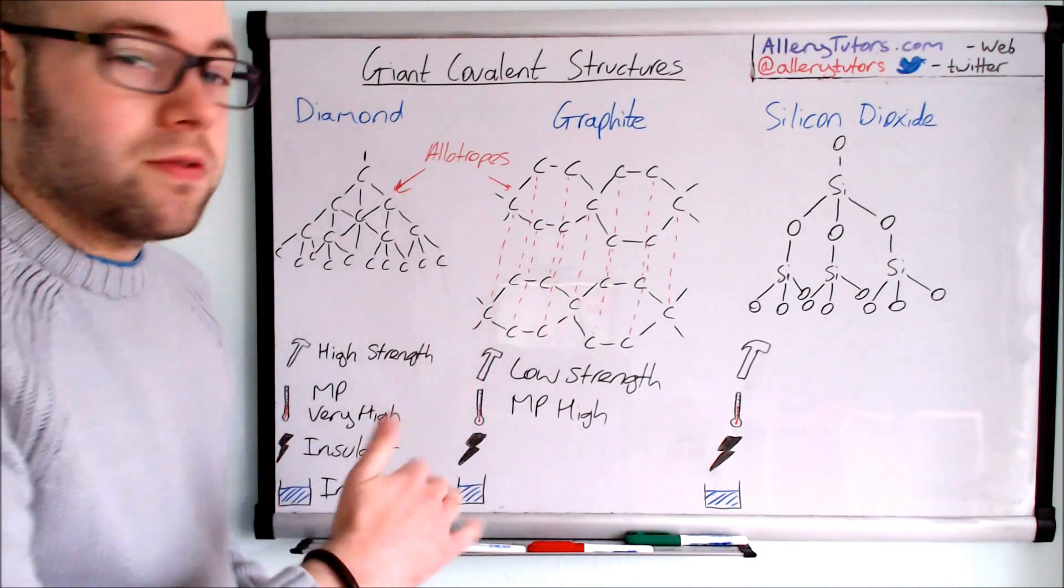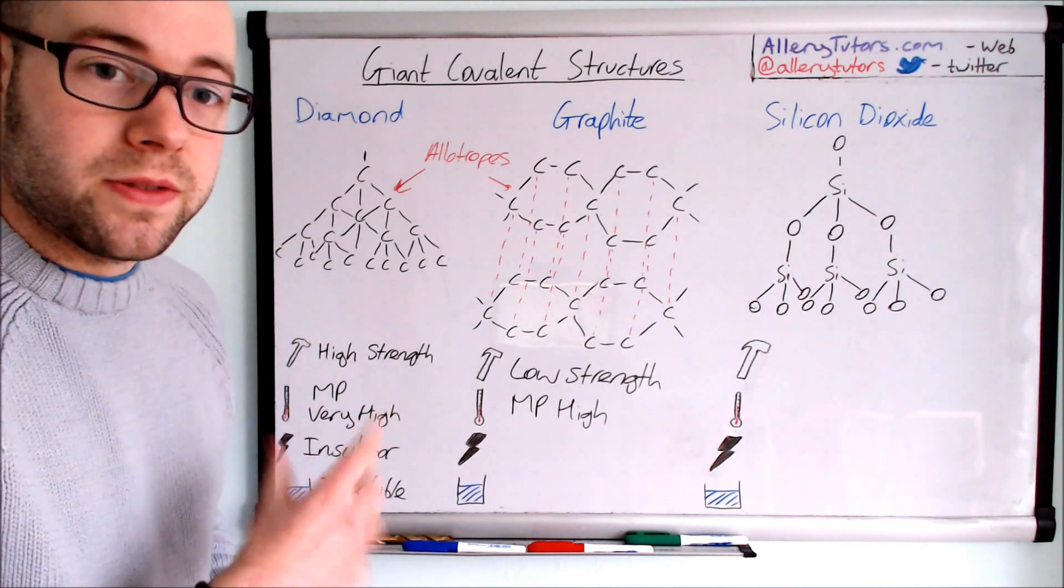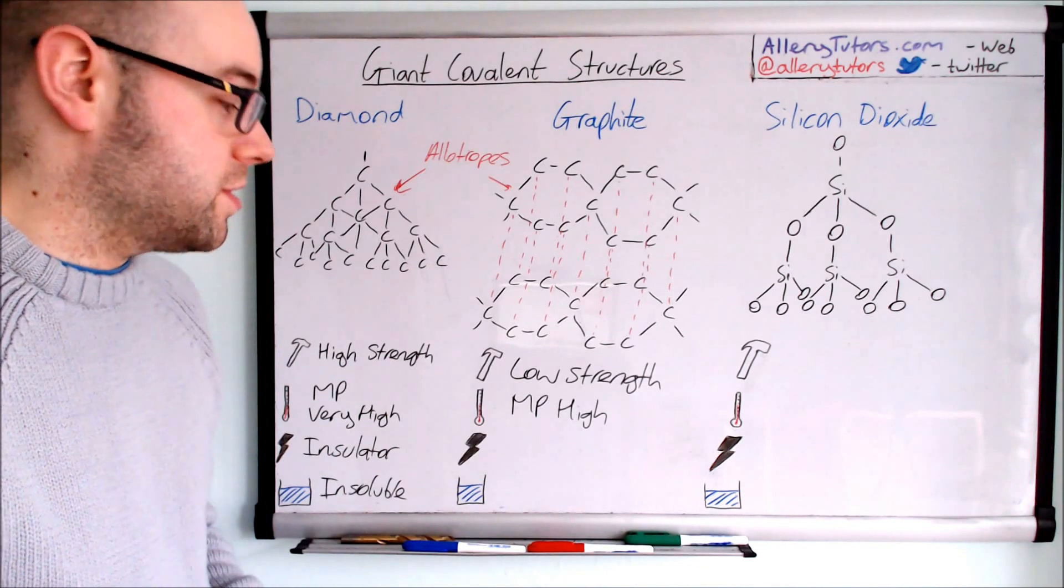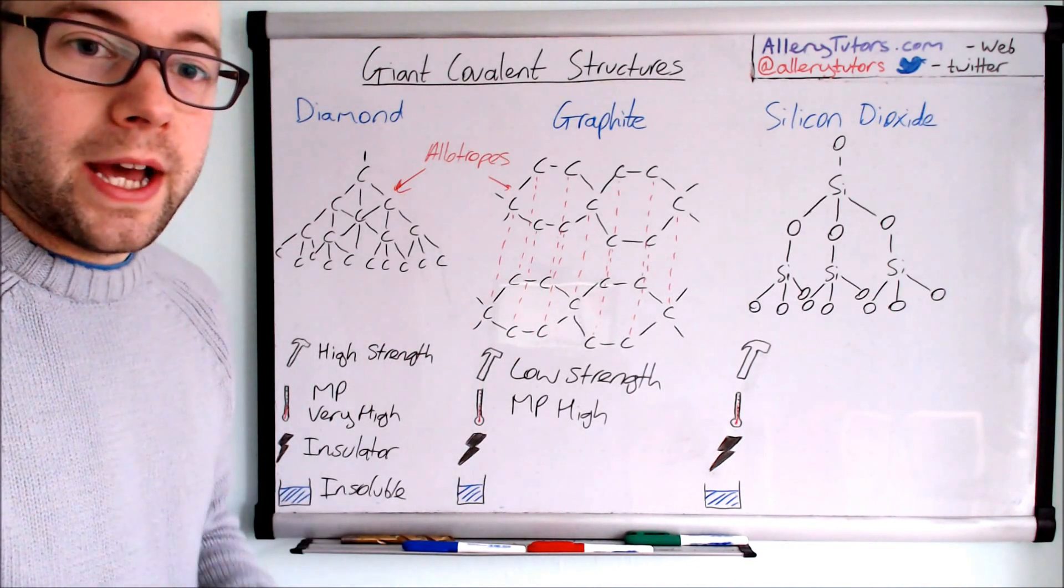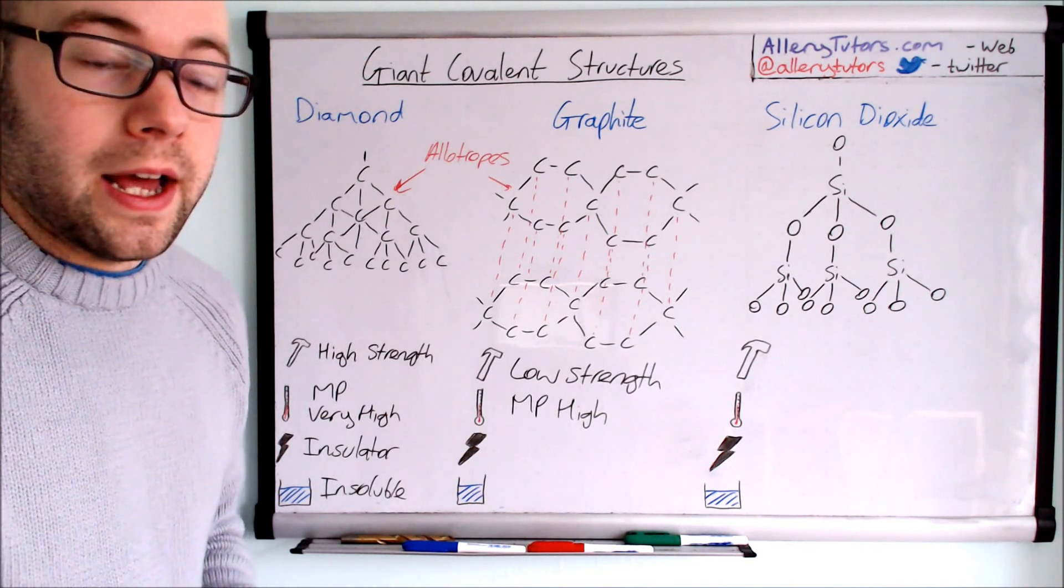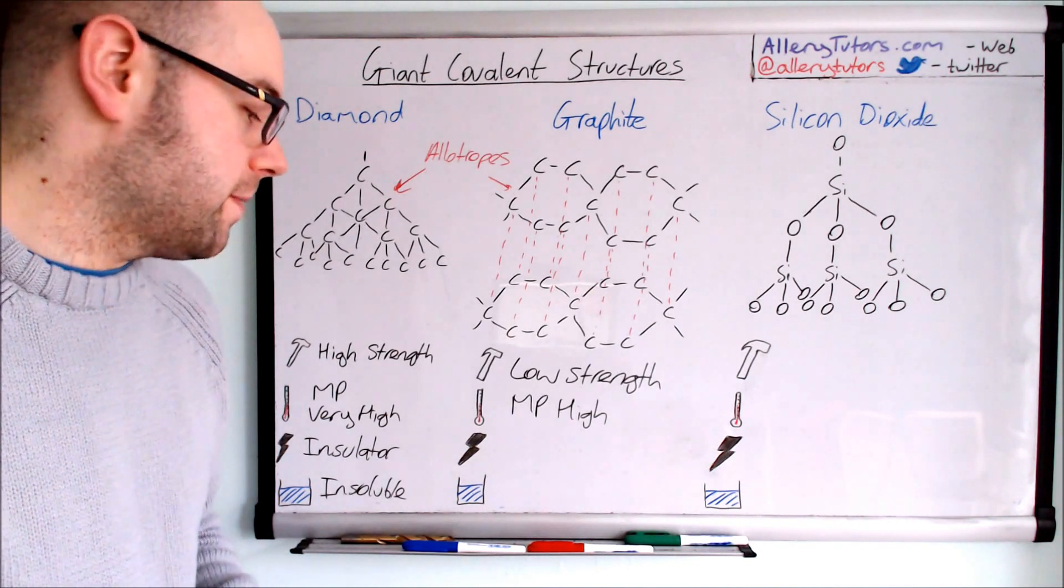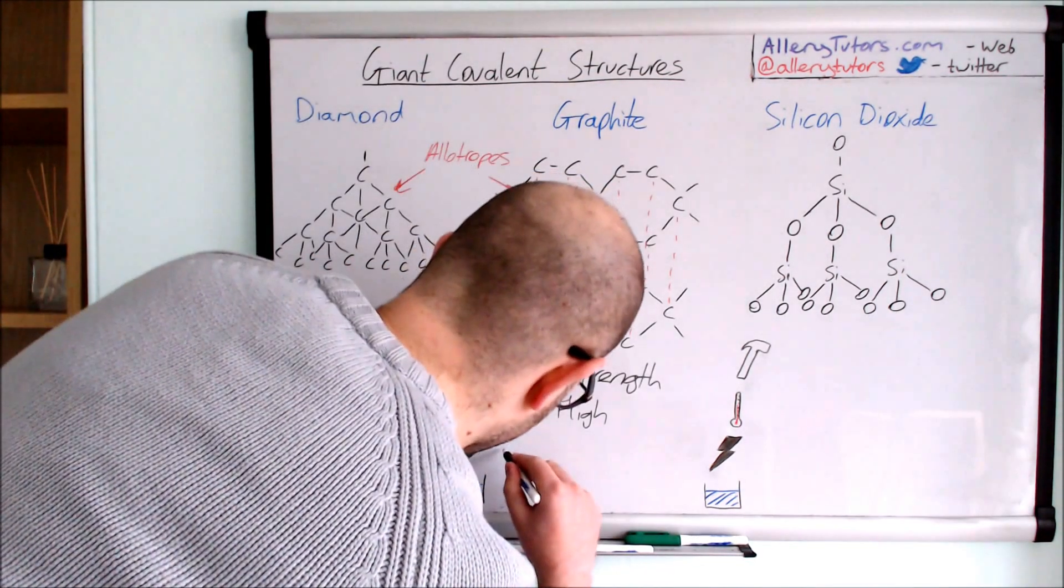Even though graphite is a non-metal because it's made of carbon, it does conduct electricity. This is quite useful because it allows us to use a lightweight material, which is carbon, for electrical purposes. For example, you can use it for electrolysis of substances, so it's pretty useful for that reason. It's a good conductor.